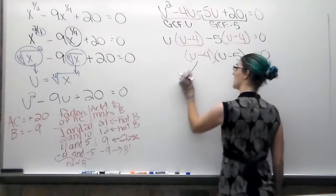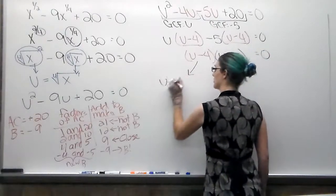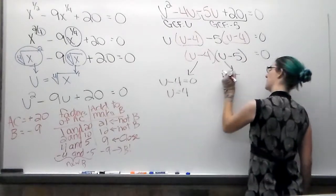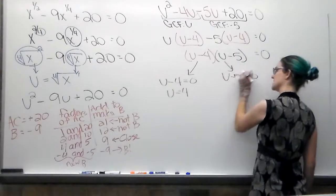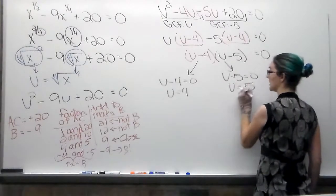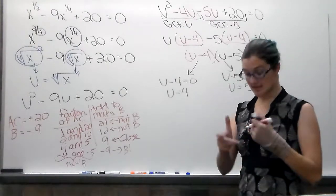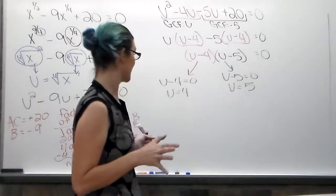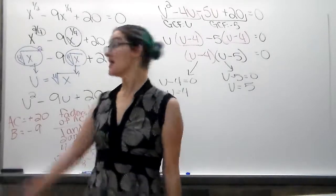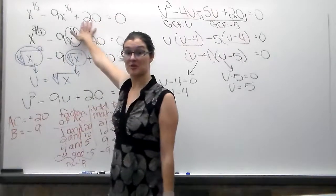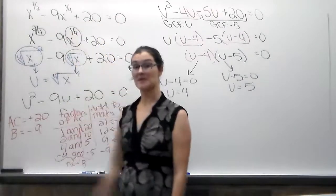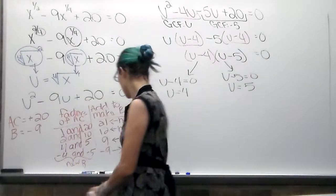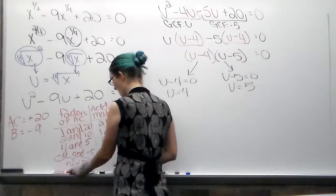Factor out the u minus 4, left over is u minus 5. And then to solve for u, u minus 4 is 0, u would equal 4. u minus 5 is 0, u would equal 5. Now the problem here is a lot of people finish right there. But it didn't ask us to solve for u. The original problem never had u in it. It was always x. So you're not done because we still have u.